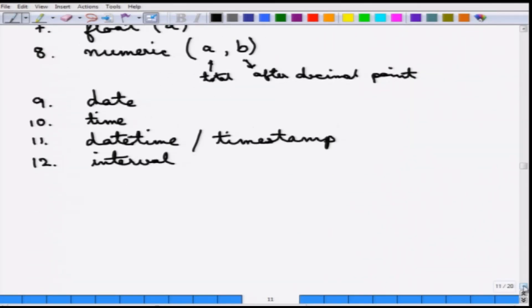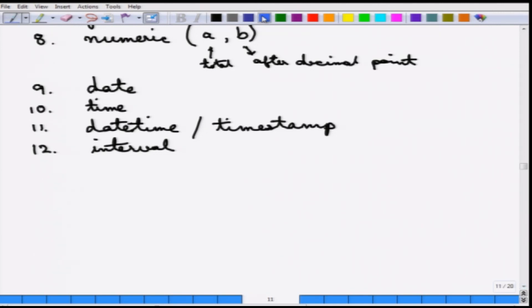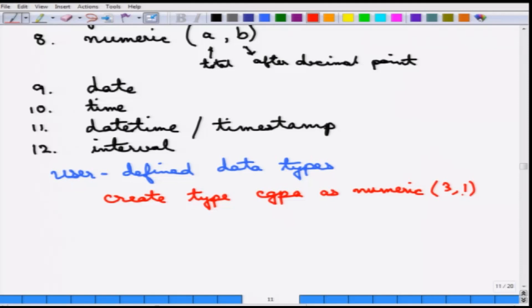In addition, SQL also lets one create user defined data types. One can create their own data types. For example, you can say create type, let's say CGPA as numeric 3 comma 1. So it is just like a type definition. You are saying every CGPA must be of three digits, at most three digits with one digit after the decimal. It is just a type name for this.